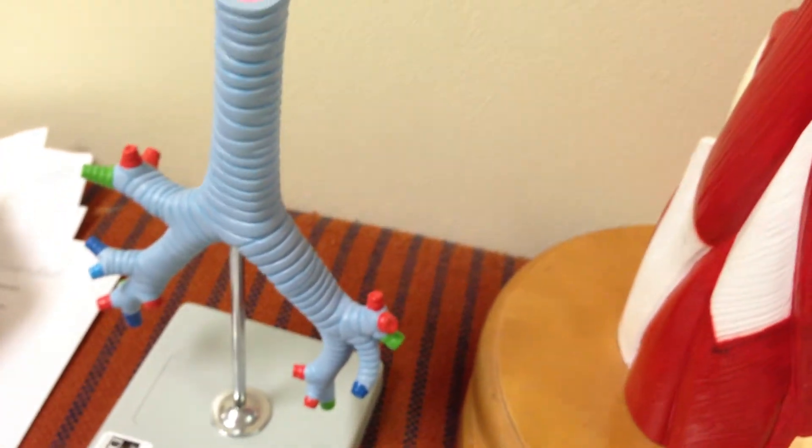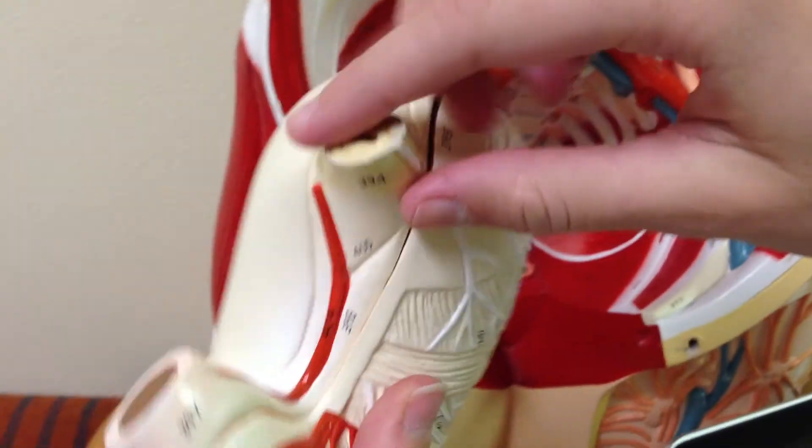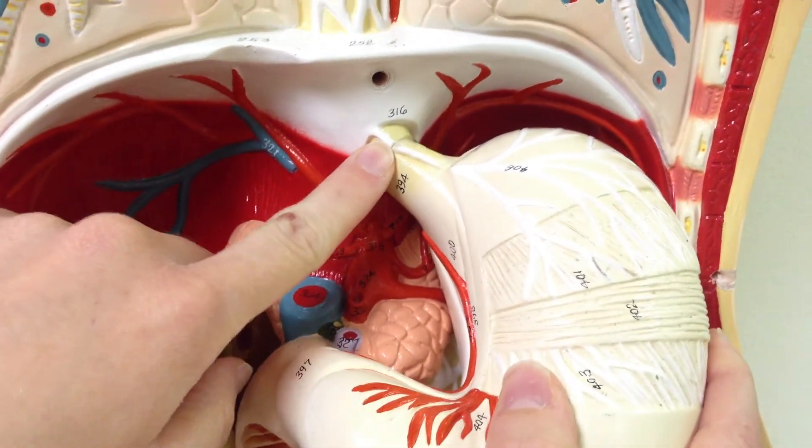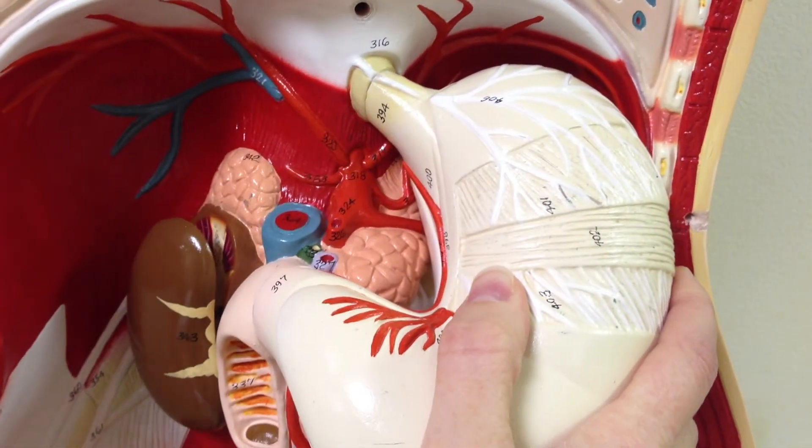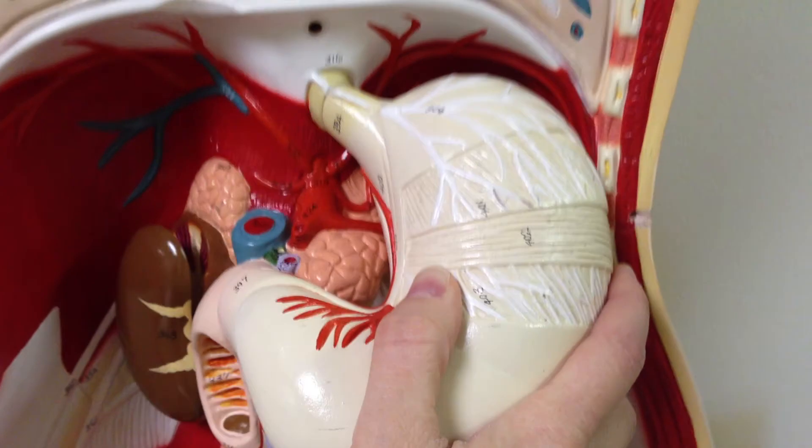Okay. What about, we have the greater curvature, and then where's the lesser curvature? Oh, the lesser curvature, it's just like this right here. Okay, cool. Is there another sphincter up here somewhere? Yeah, I think that's the lower esophageal sphincter that allows food to pass from the esophagus into the stomach, but it's not really a true sphincter. It's just a flap. Perfect.